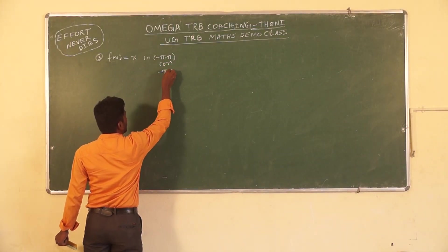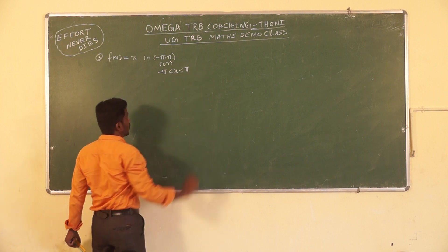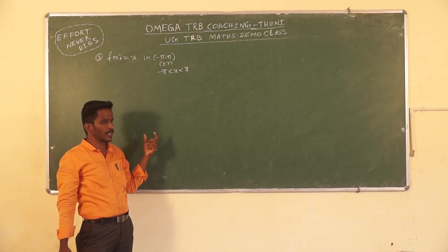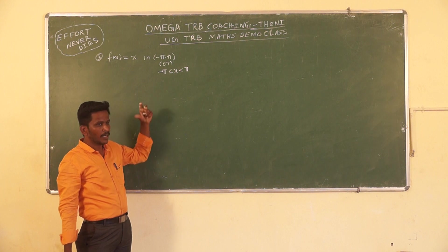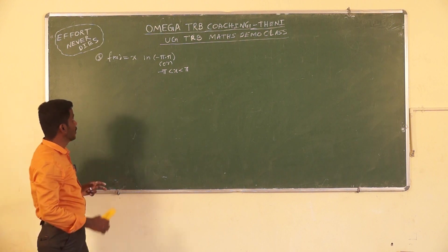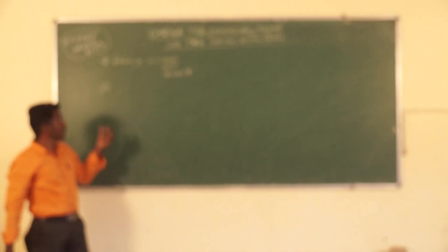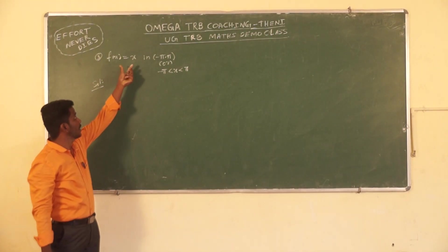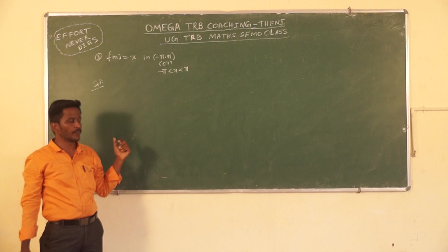New problem: the interval is −π < x < π (or −π ≤ x ≤ π with closed interval). We need to find a₀, aₙ, bₙ. First, check whether the given function is even or odd by replacing x with −x. Given f(x) = x, so f(−x) = −x.